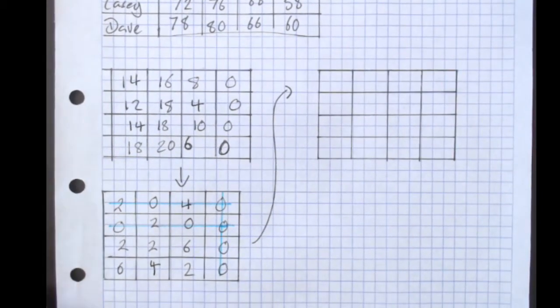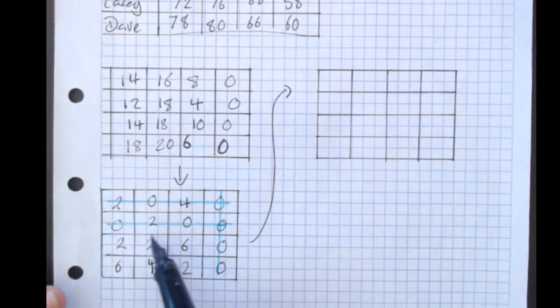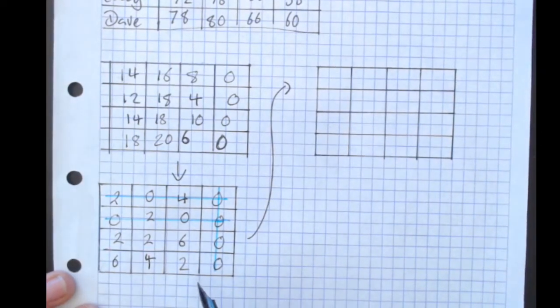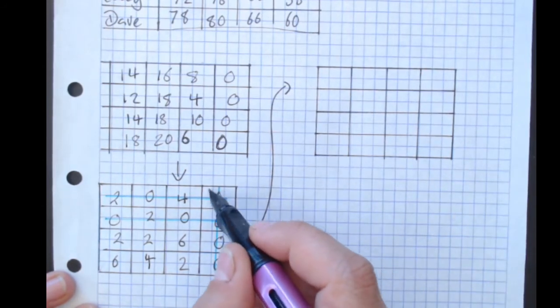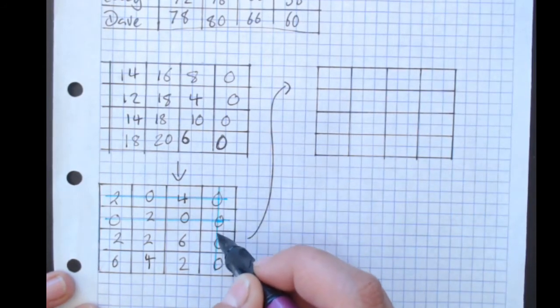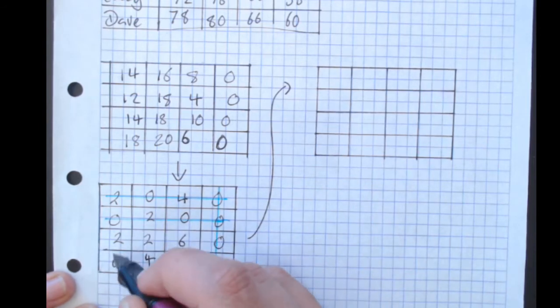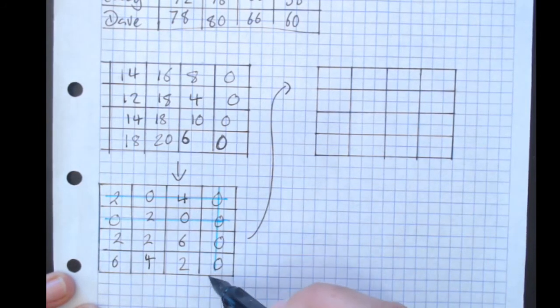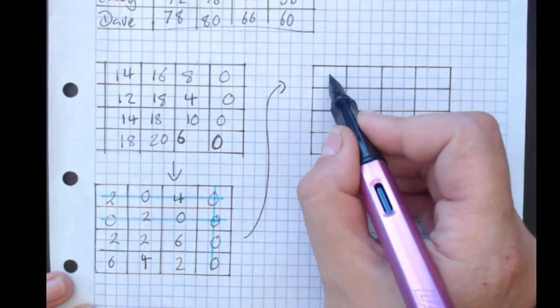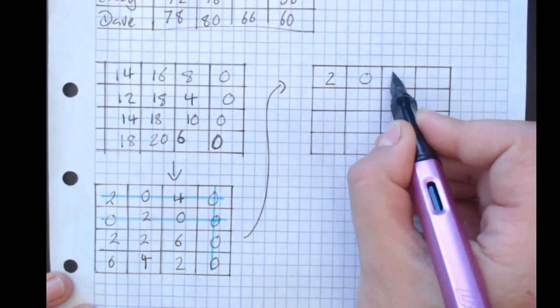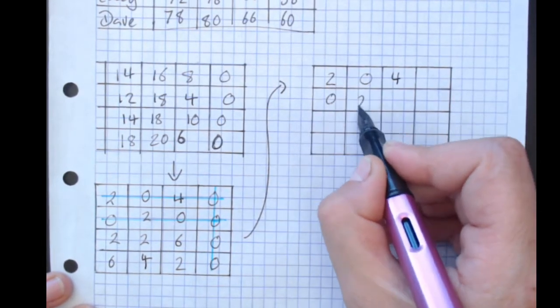Then you find the lowest uncovered value, which would be two. And you're going to make changes to any value that's crossed by two lines or any value that's not crossed. So we're not going to make changes to the values that are only crossed by one line. And I like to write those in so I don't get too confused.